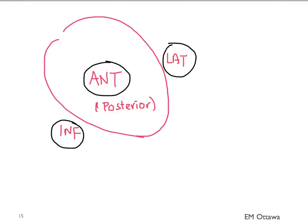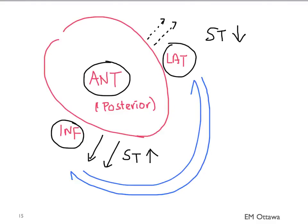The rules of reciprocality in ST elevation mean that if there is an ST elevation MI in one territory of the heart, the opposite territory should show ST depression, picking up the mirror changes. In a patient with ST elevation in the inferior leads, the lateral leads should show ST depression, and vice versa. These two territories always reciprocate with each other. The same applies to anterior and posterior leads.